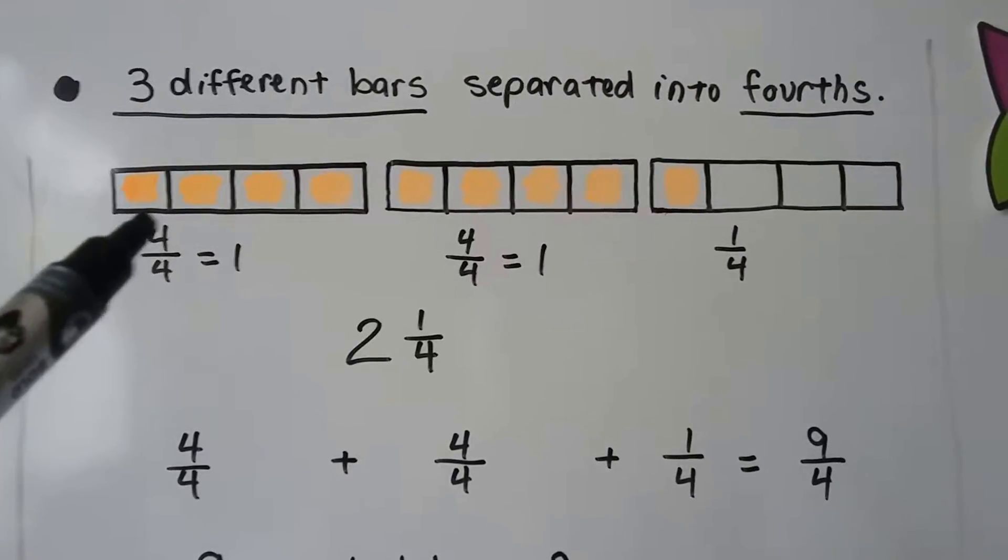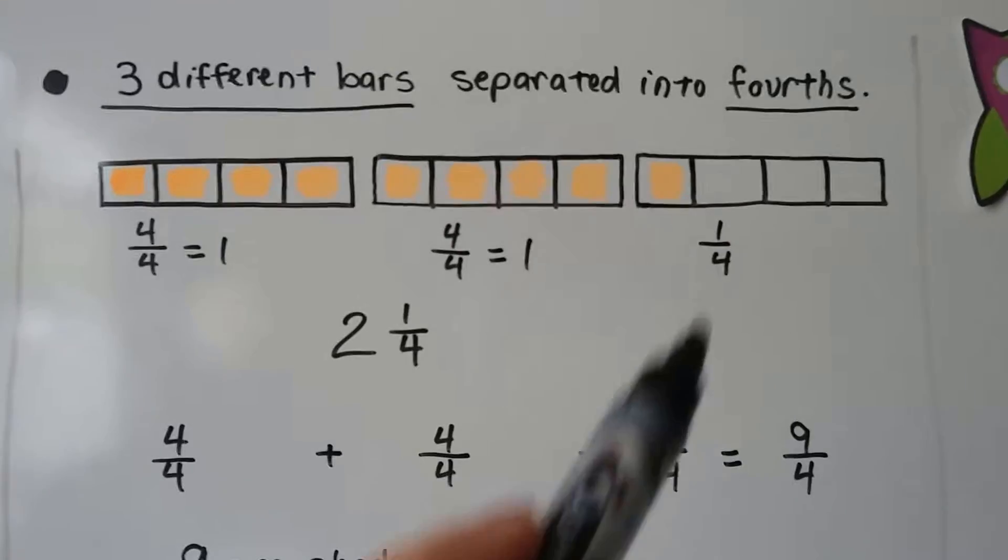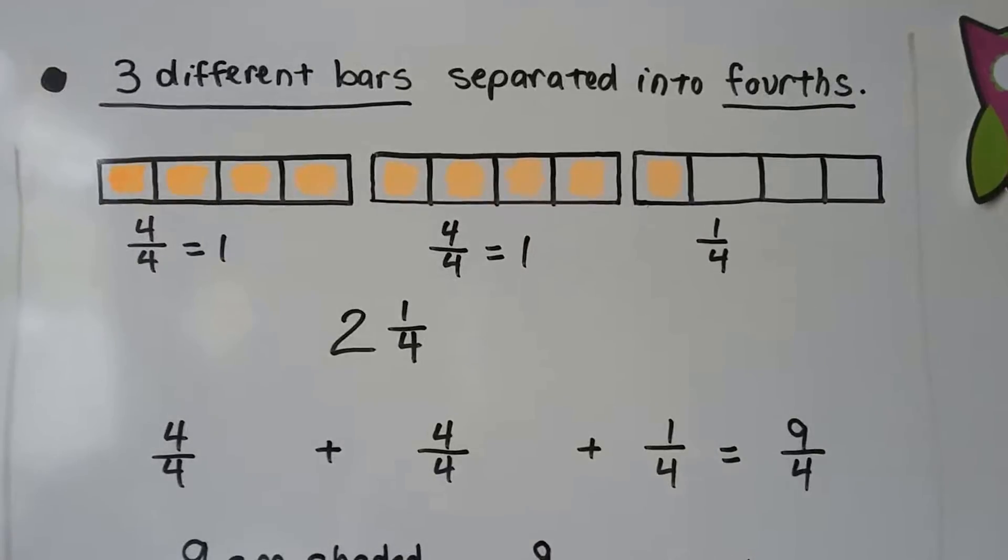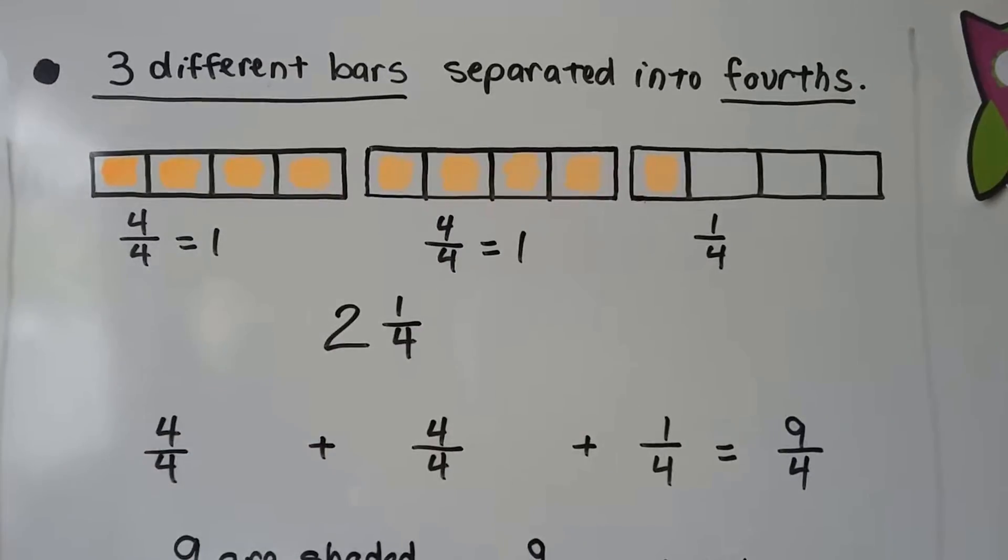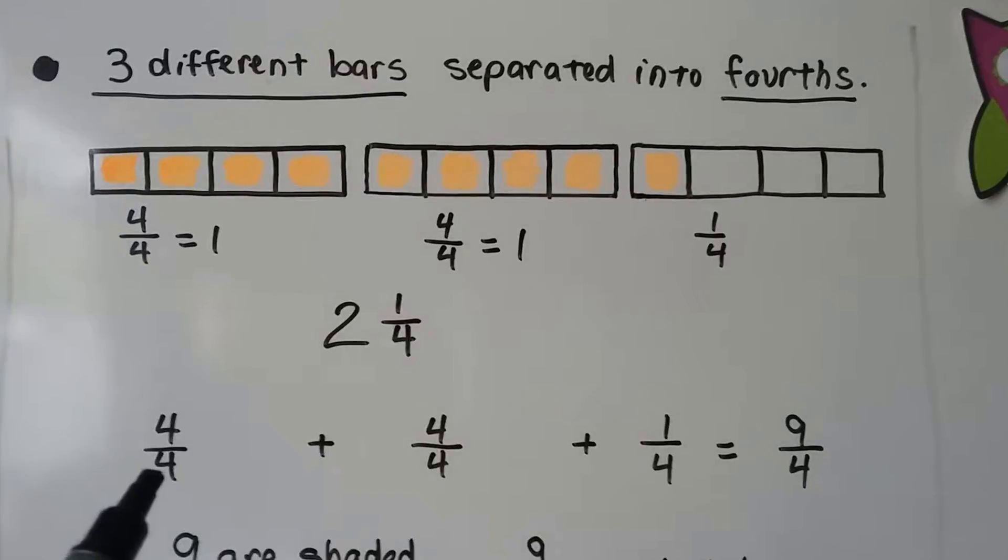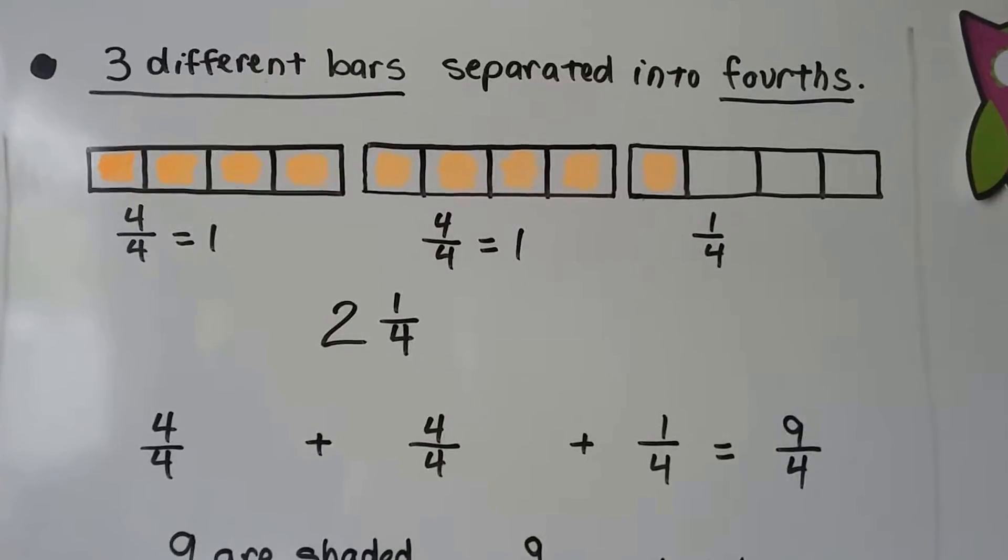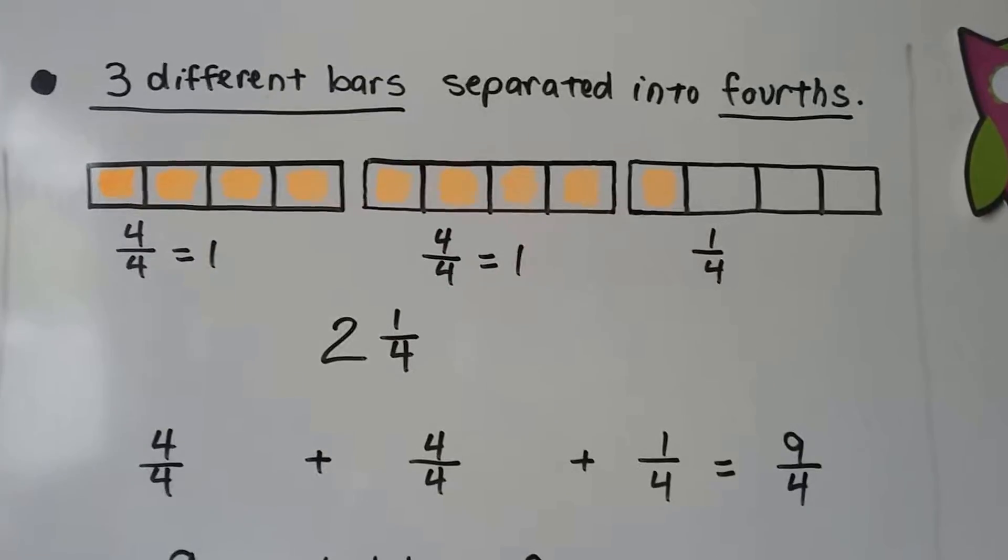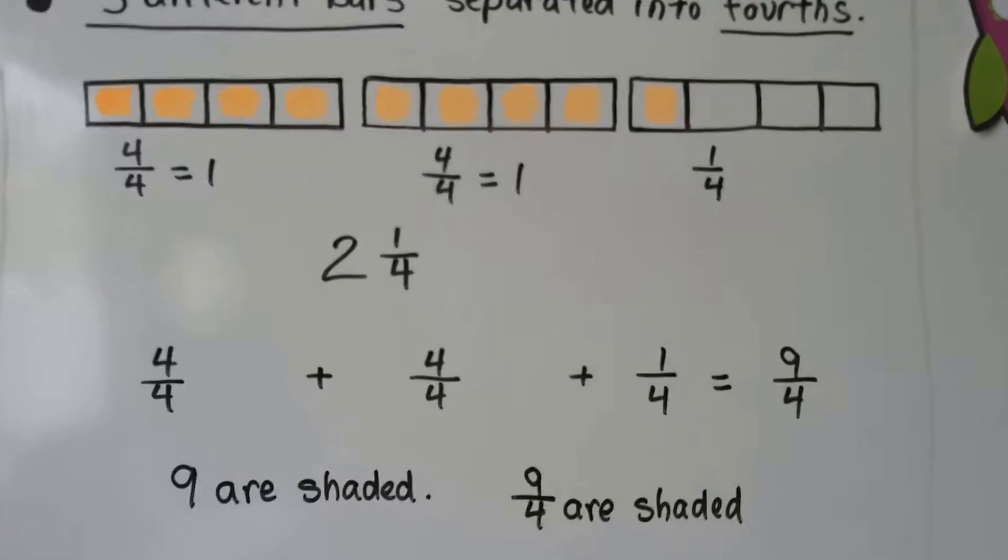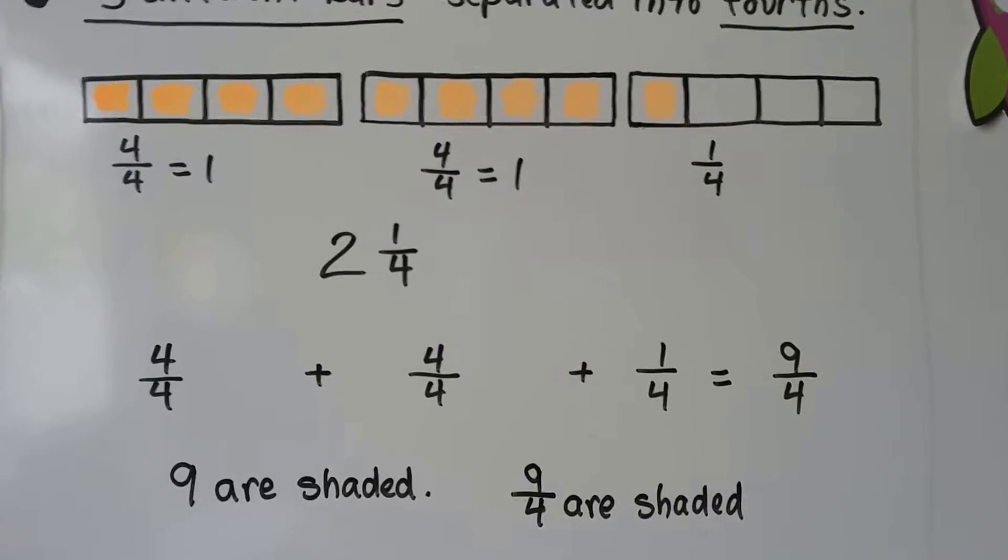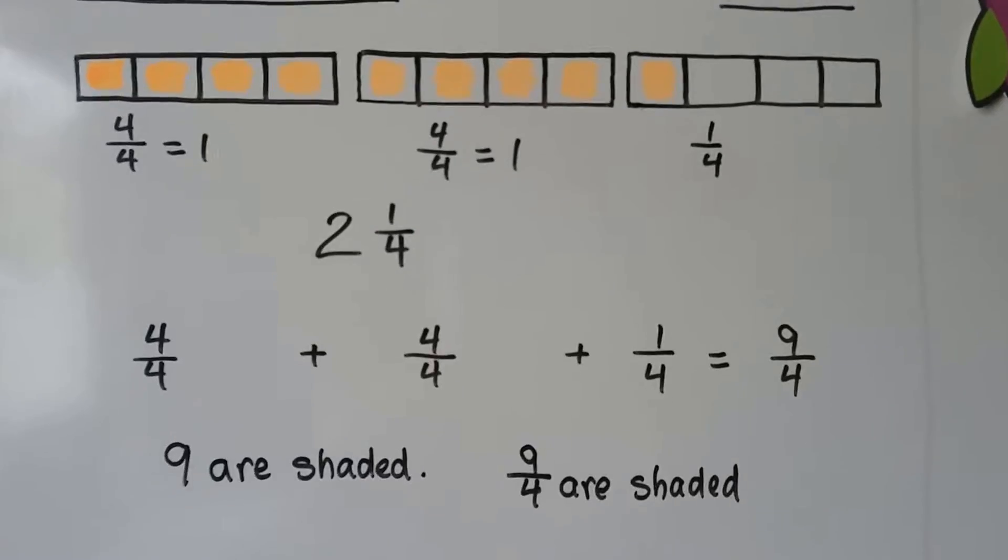We can also look at it as this 4 fourths plus this 4 fourths plus this 1 fourth is 9 fourths. We add the numerators going straight across. 4 plus 4 plus 1 is 9, and when the denominators are the same, we just slide it across. But we're going to get more into adding fractions coming up. So 9 are shaded, 9 fourths are shaded. So 2 and 1 fourth is the same thing as 9 fourths. It represents the same amount.